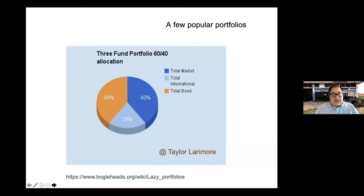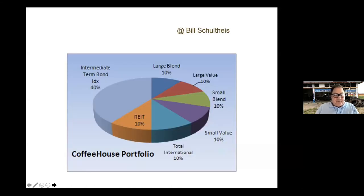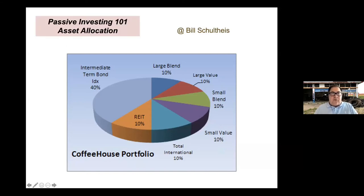The bond portion earns very little nowadays in the United States — and around the world it's not much better, though it may improve in the future. More diversification is better.